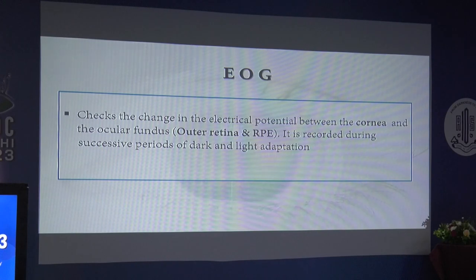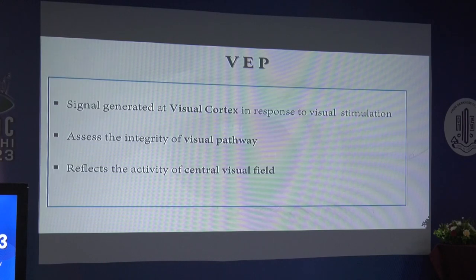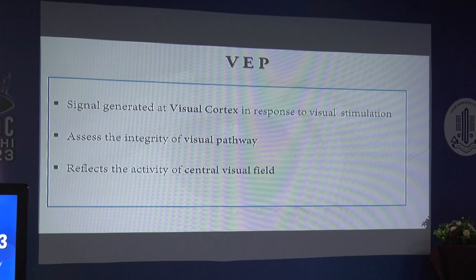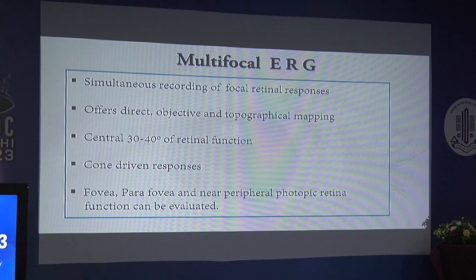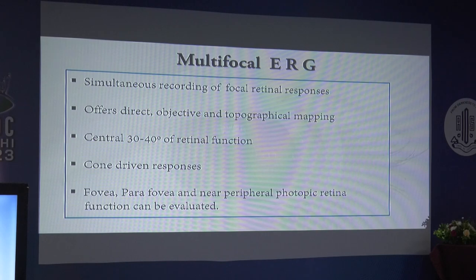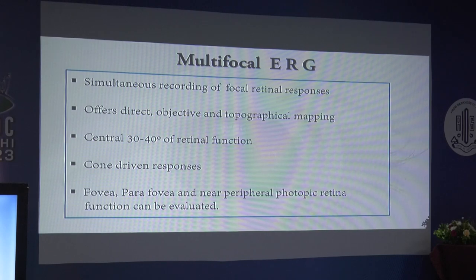The full field electroretinogram is a mass electrical response of the retina to photic stimulation from photoreceptors of the inner plexiform layer. Pattern ERG measures central retinal and ganglion cell functions; stimulation is by reversing black and white checkerboard, and it differentiates optic nerve and macular dysfunction. The EOG checks the change in electrical potential between the cornea and the ocular fundus — the outer retina and RPE — recorded during successive periods of dark and light adaptation. In VEP, the signal is generated at the visual cortex in response to visual stimulation, assessing the integrity of the visual pathway and reflecting activity of the central visual field.